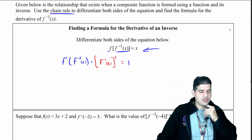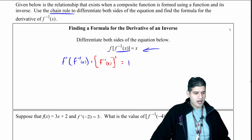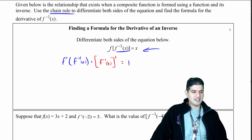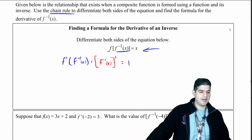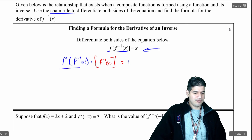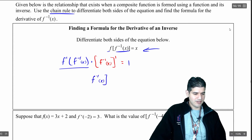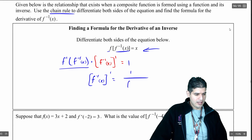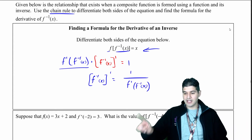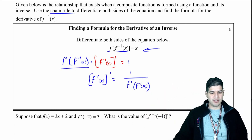What we covered on the previous page is that the composition f of the inverse of f of x equals x — I'm not pulling this out of thin air. I want to solve for the derivative of the inverse. I'll divide both sides by f prime of the inverse of f of x. So the derivative of the inverse of f of x equals 1 over f prime of the inverse of f of x. That right there is the derivative of the inverse function formula.